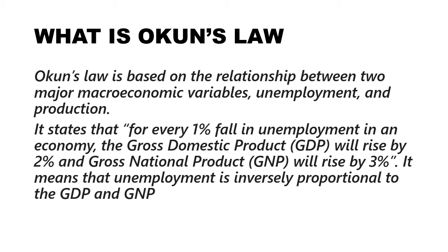The law works on two variables — unemployment and production — and the relationship they share is an inverse relationship. An inverse relationship means when one variable is increasing, the other is decreasing. Through this law, we can see that when production increases, more and more people will be required to work, so unemployment will automatically decrease.